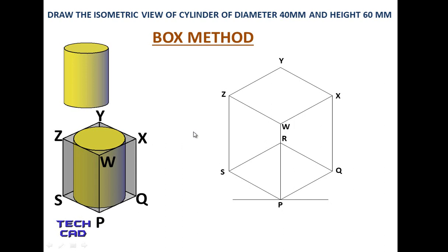Now I place my cylinder inside this box. When putting the cylinder in between the box, you have to make an ellipse. When you see this circle — the top view of the cylinder is always a circle — but when you see that circle at some angle it gives you an ellipse, not a circle. We have already discussed this in previous videos. The method to draw the ellipse is known as the four center method.